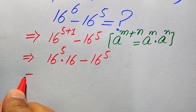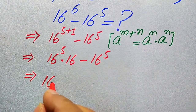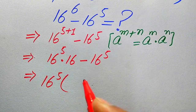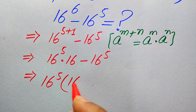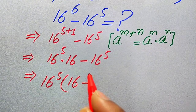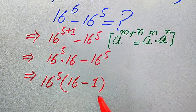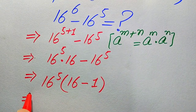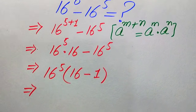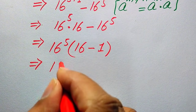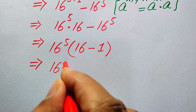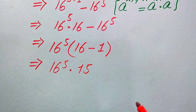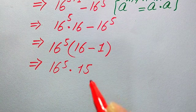Now we factor out 16 to the power of 5. When we take 16 to the power of 5 as common, the remaining values are 16 minus 1. So the expression becomes 16 to the power of 5 multiplied by 15.